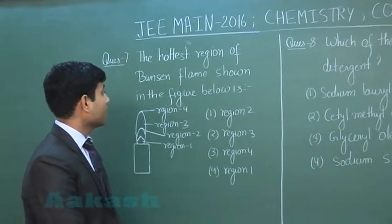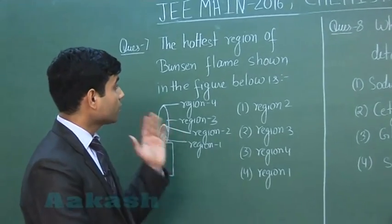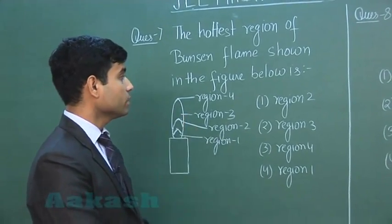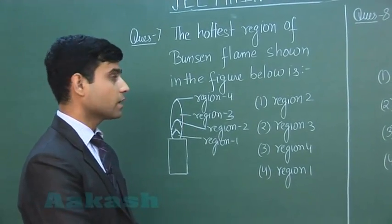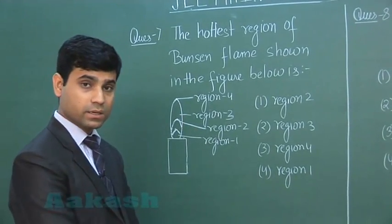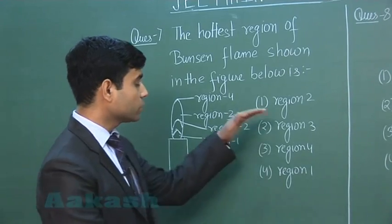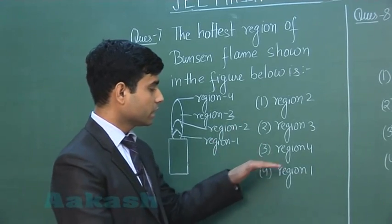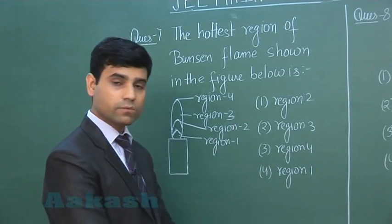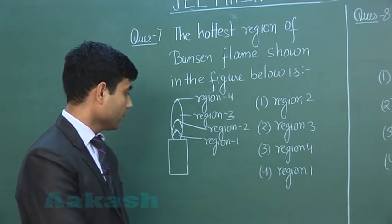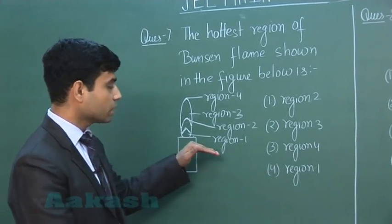This is the next question: the hottest region of a Bunsen flame shown in the figure below is which region? We have 4 regions — region 1, region 2, region 3, and region 4, which are shown in the diagram. Region 1 is indicated here.